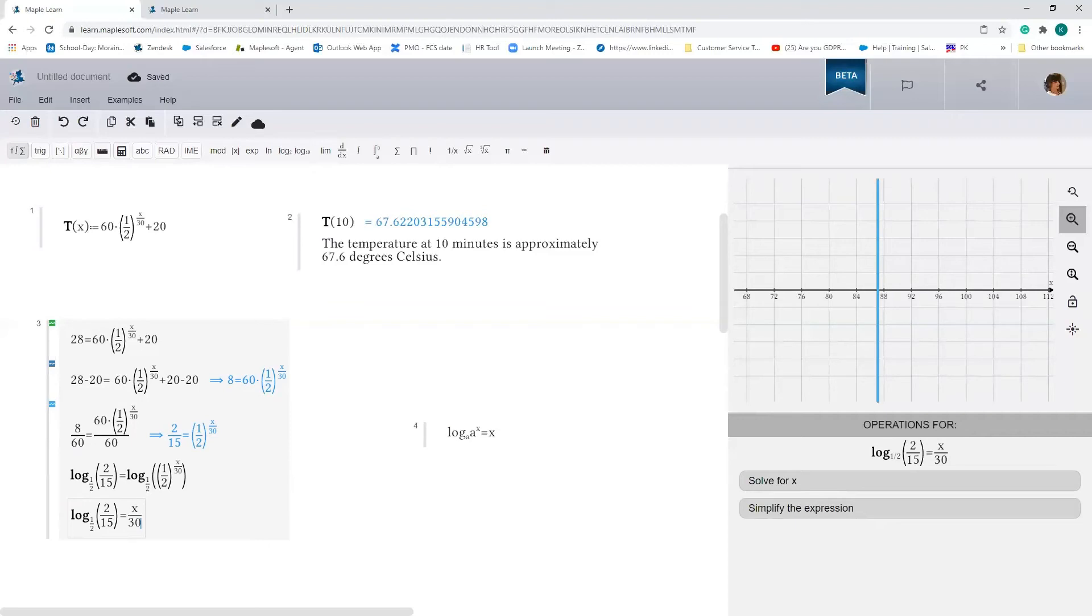Now we need to evaluate this left hand side. And so to do this, we must apply the change of base formula, which states that log base a of x is equal to log base b of x divided by log base b of a, where b can be any value we want. Let me write that down.